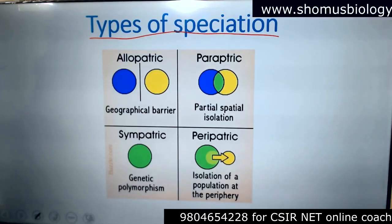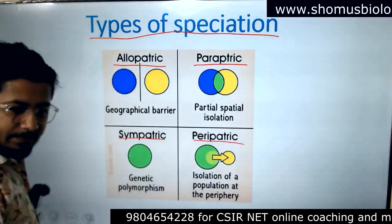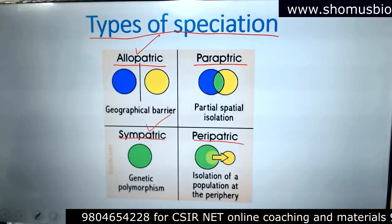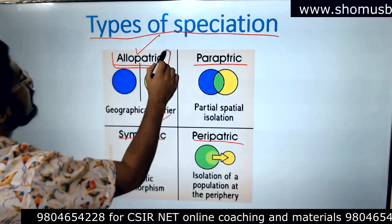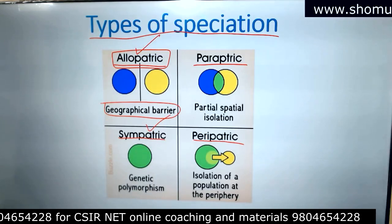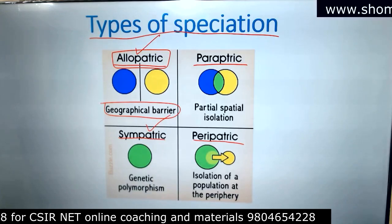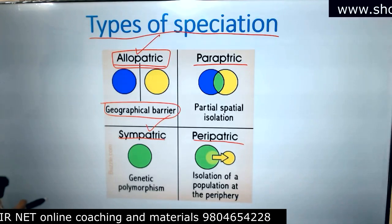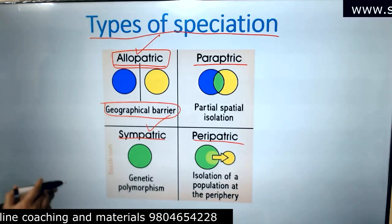There are four different types of speciation: allopatric, parapatric, sympatric, and peripatric. Allopatric speciation is when speciation starts with a geographical barrier — the geographical barrier results in separation of organisms into different environments so that they can evolve differently. Sympatric speciation is when there is no geographical barrier; instead, there is only a change in genetic or allele frequencies within a population.